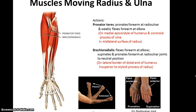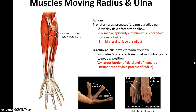Then we have other muscles that move the radius and ulna. We have the pronator teres, which pronates the forearm at the radial ulnar joint and can also weakly flex the forearm at the elbow. Its origin is the medial epicondyle of the humerus and the coronoid process of the ulna, and its insertion is the mid-lateral surface of the radius. Then we have the brachioradialis, which flexes the forearm at the elbow and also supinates and pronates the forearm back to the neutral position. Its origin is the lateral border of the distal end of the humerus, and its insertion is superior to the styloid process of the radius.